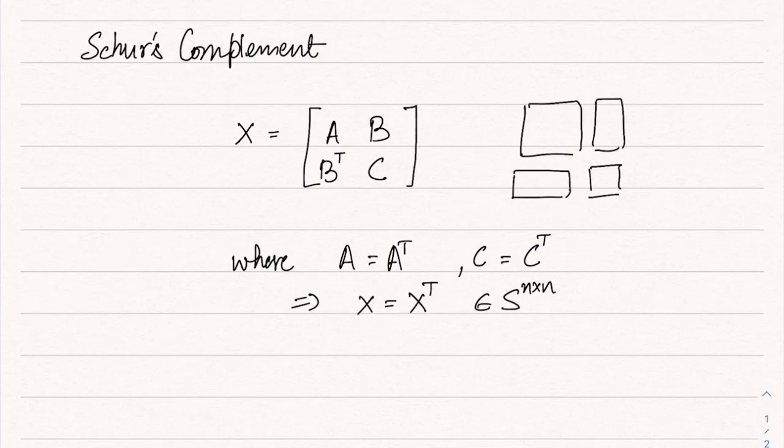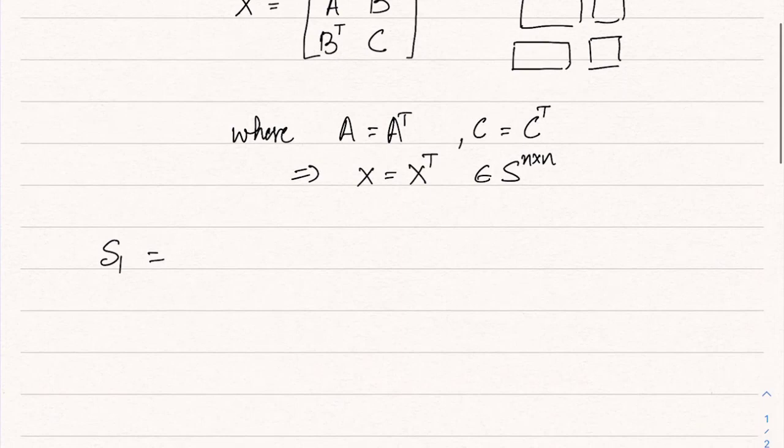The Schur complement of X is given by two formulations. S1 is equal to C minus B transpose A inverse B, provided of course that A is invertible.